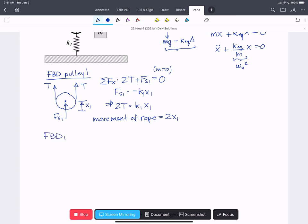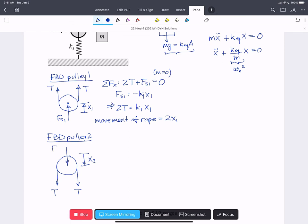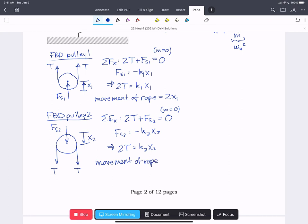We'll do the free body diagram of pulley two. And similarly, we've got the pulley, we've got two tensions. When the mass is applied, the pulley is going to move downwards by a distance x two. And we've got force of the spring two. Sum of forces in x will have 2T plus force of the spring two equals zero because mass equals zero of the pulley. Fs two equals minus k two x two. And we end up with two times tension equals k two x two. The movement of the rope through the pulley to allow it to move x two is going to be 2x two.